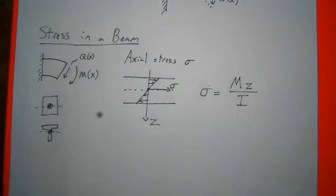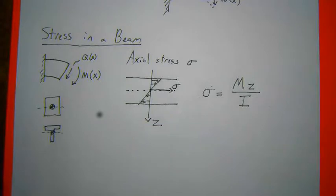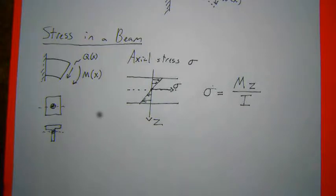We won't be doing any complicated area moments of inertia — it'll honestly just be rectangular beams. The main point is so you can use it later in the beam bending lab, which is done with square beams. We actually have setups for hollow circular and hollow rectangular beams, but we won't worry about those here.